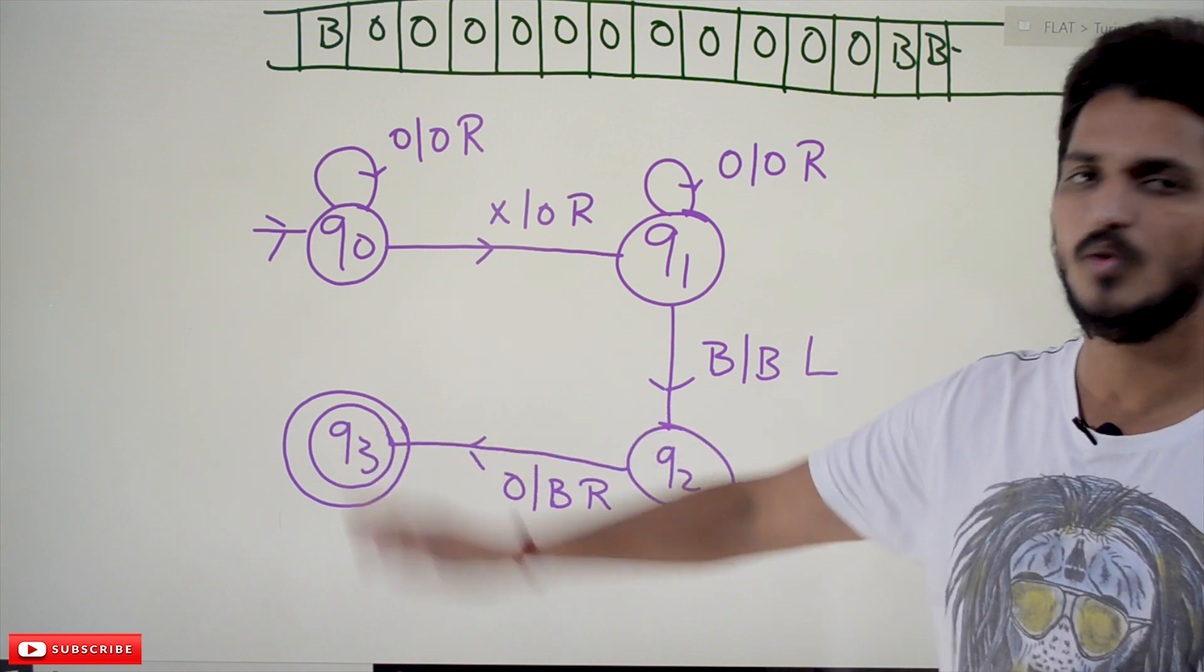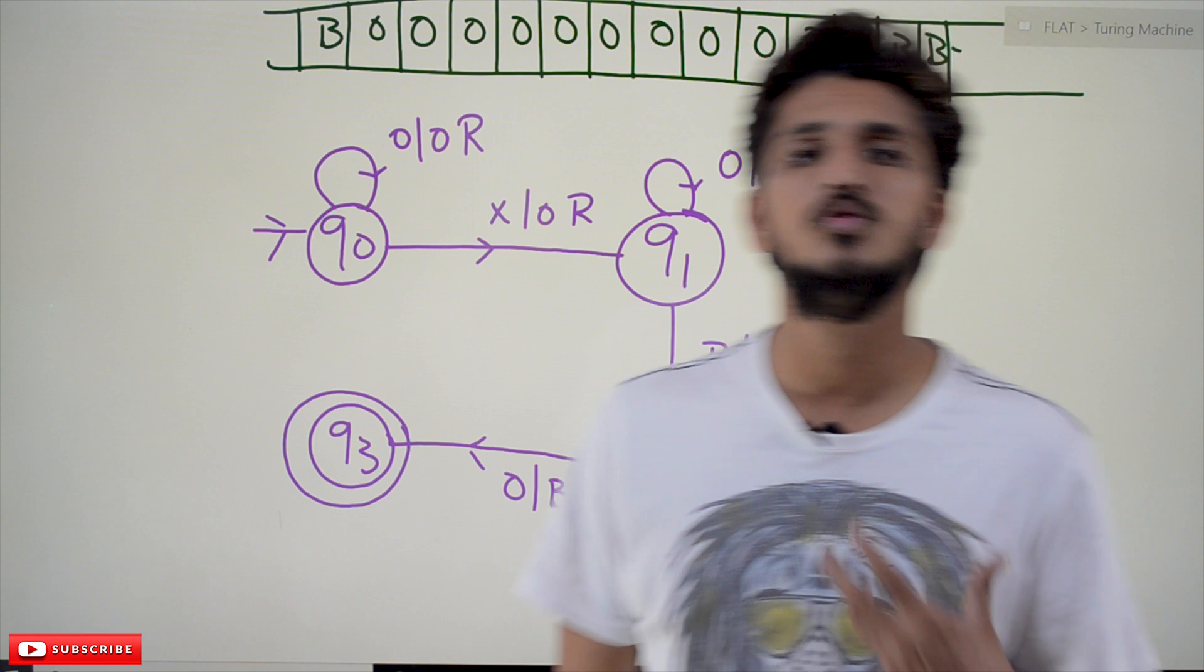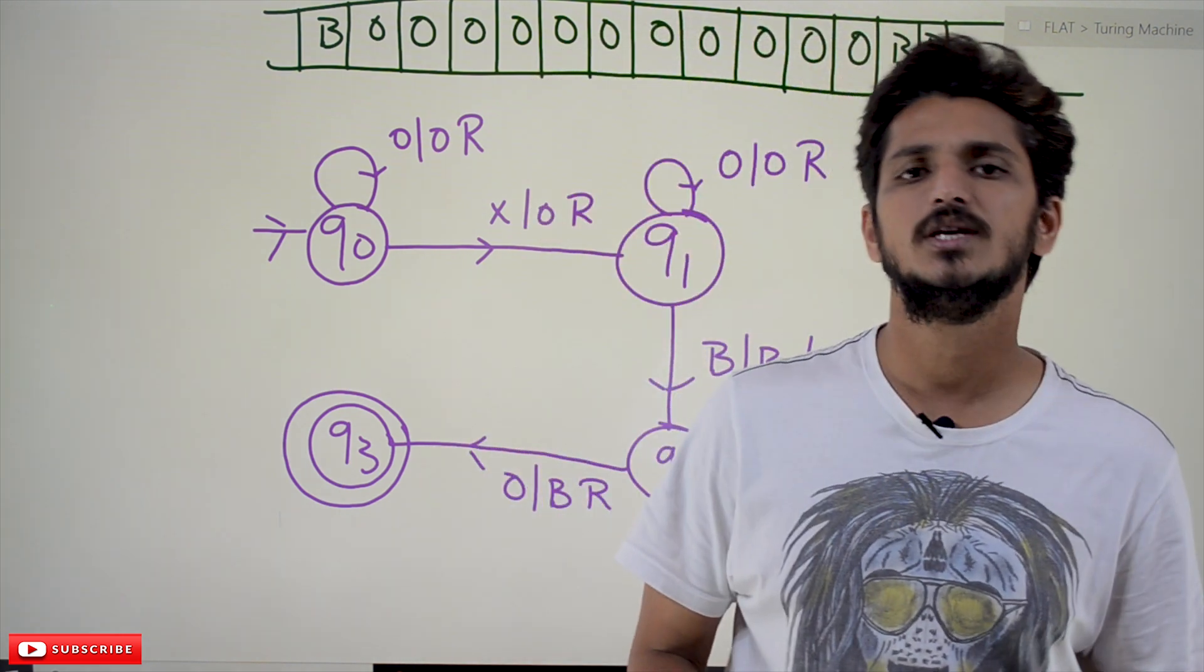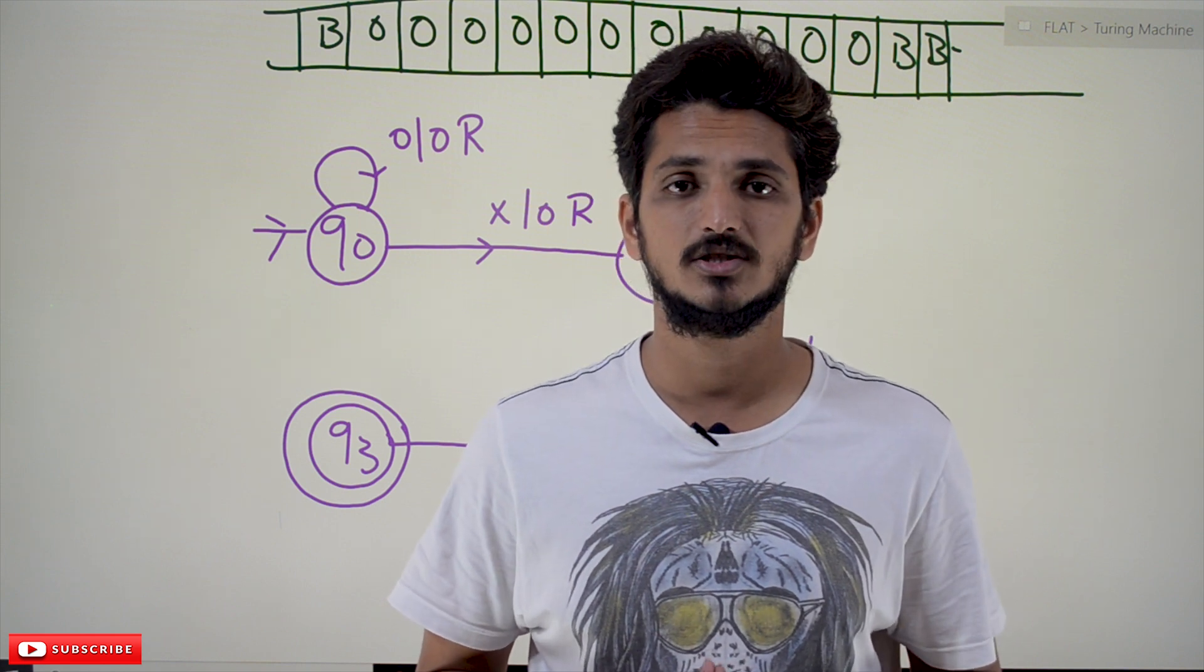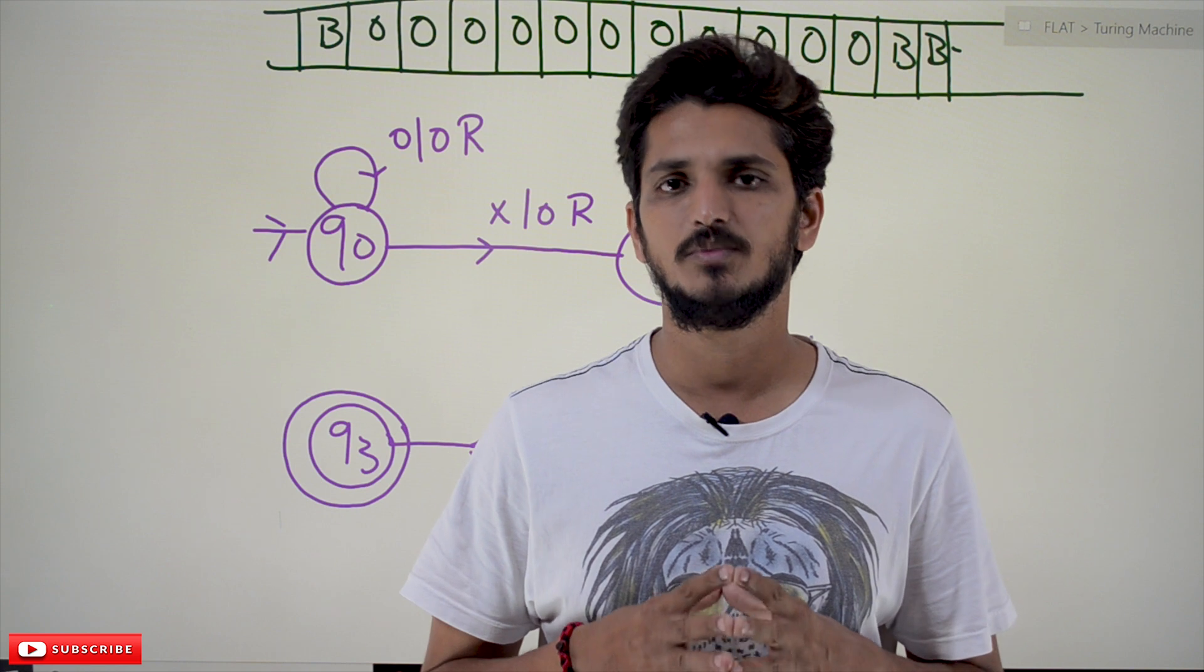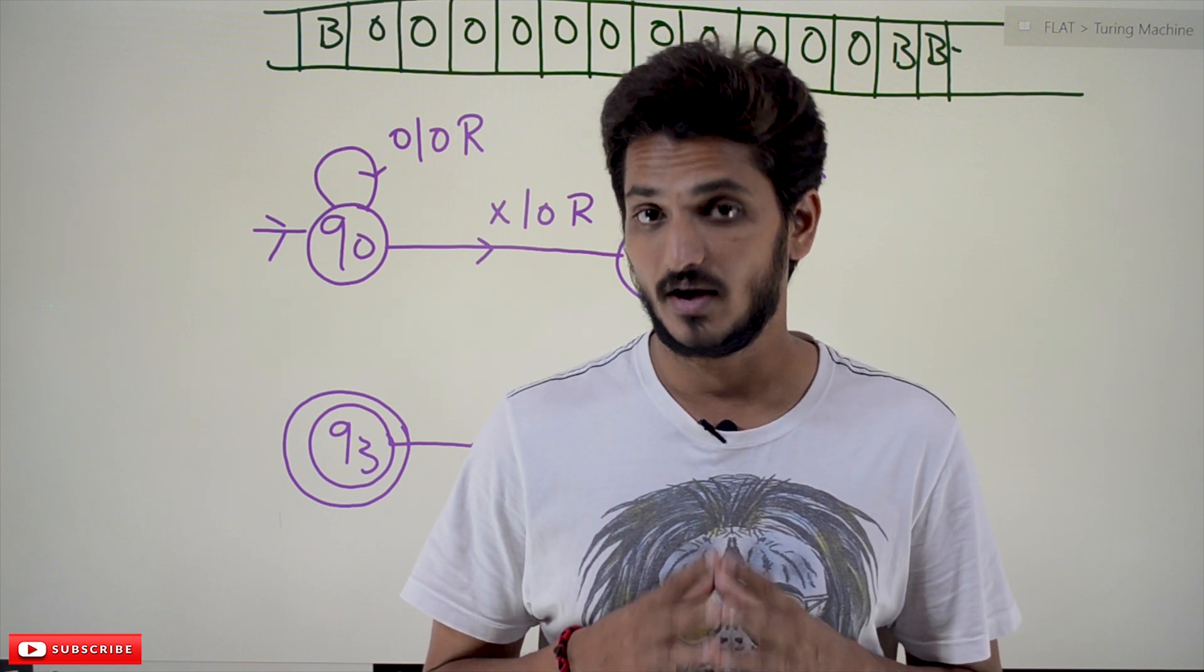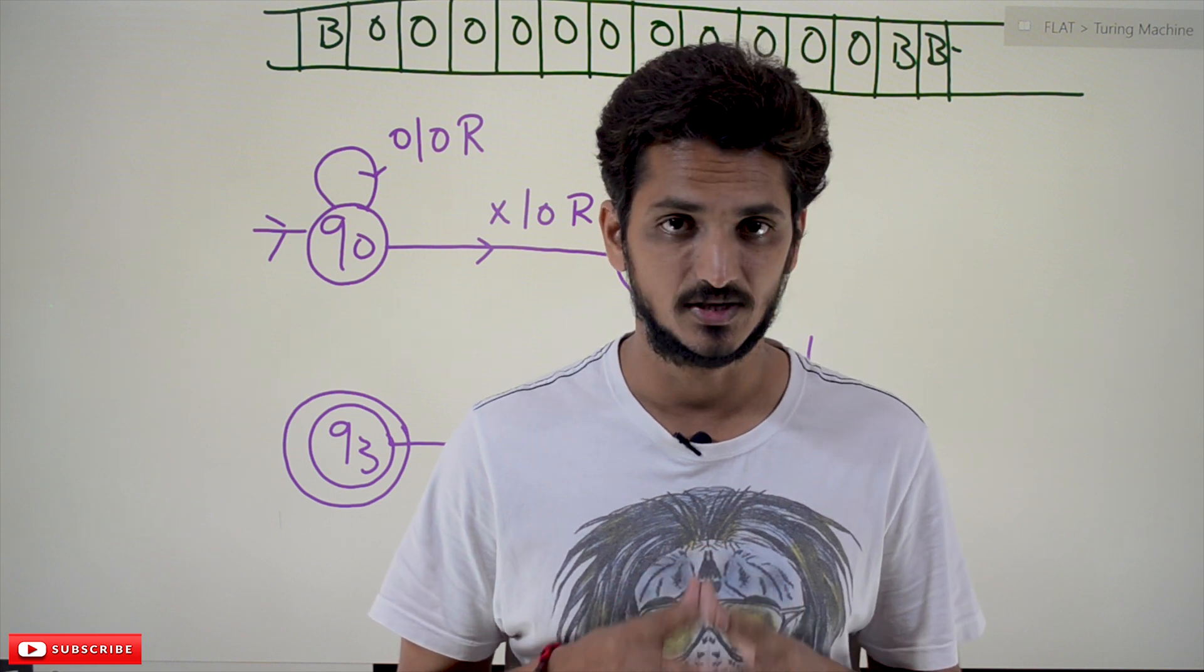This is how we will do addition of two unary numbers using Turing machine. Hope you understand the example. If you have any questions regarding the concept, please post your questions in the video description below. Subscribe to our channel and press bell icon for the latest updates. Thank you.